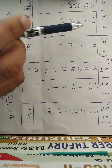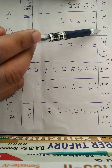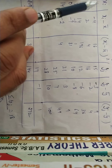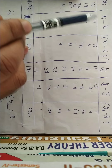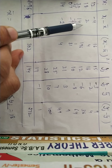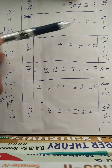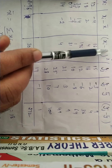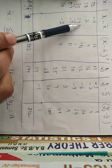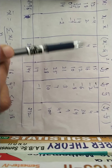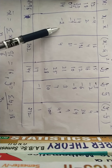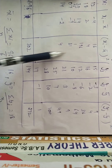Now subtract the mean from each X entry: 12 − 16 = −4; 18 − 16 = 2; 13 − 16 = −3 (and so on for all entries). Then square each deviation: (−4)² = 16; (2)² = 4; (−1)² = 1; (−9)² = 81; (−2)² = 4. Sum all these squared deviations for X.